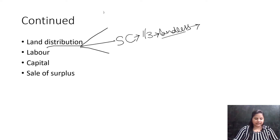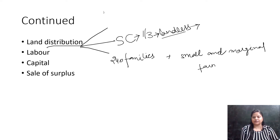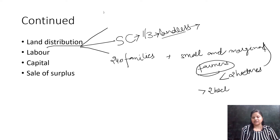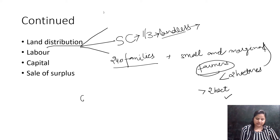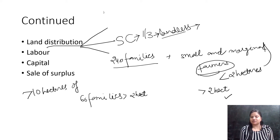Apart from that, there are 240 families who are small and marginal farmers. According to the Government of India, any farmer who owns less than two hectares of land is a small and marginal farmer, and anyone who owns more than two hectares is a large farmer. 240 families are small and marginal farmers, 60 families hold more than two hectares, and very few farmers own more than 10 hectares.